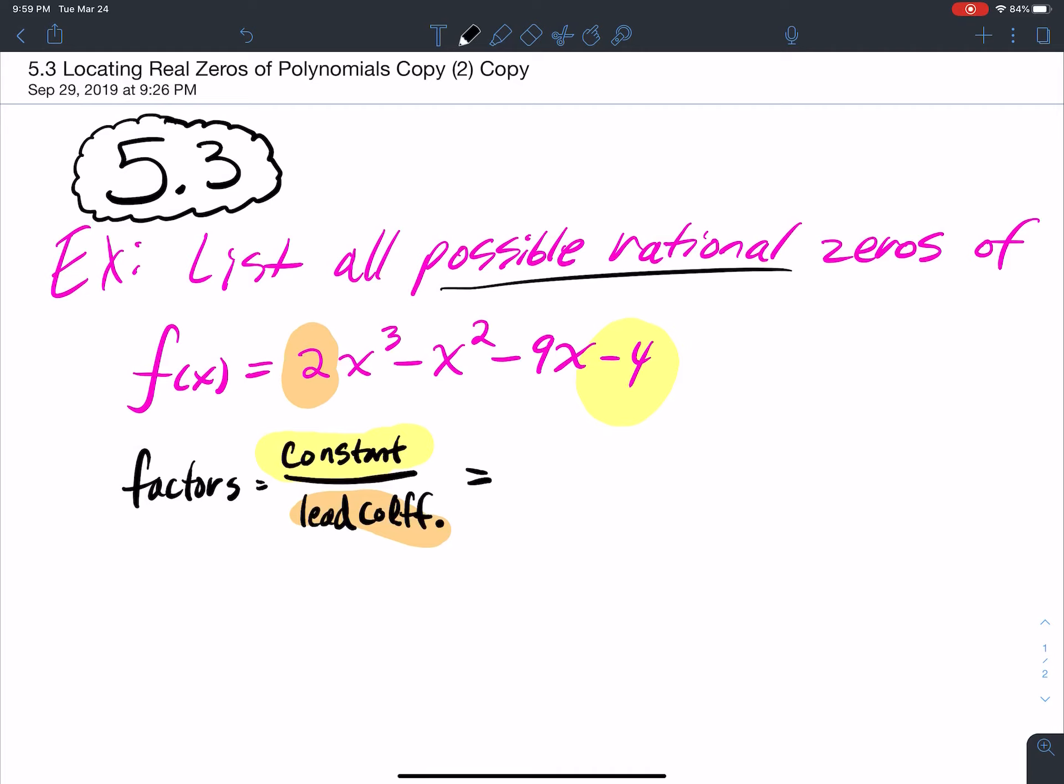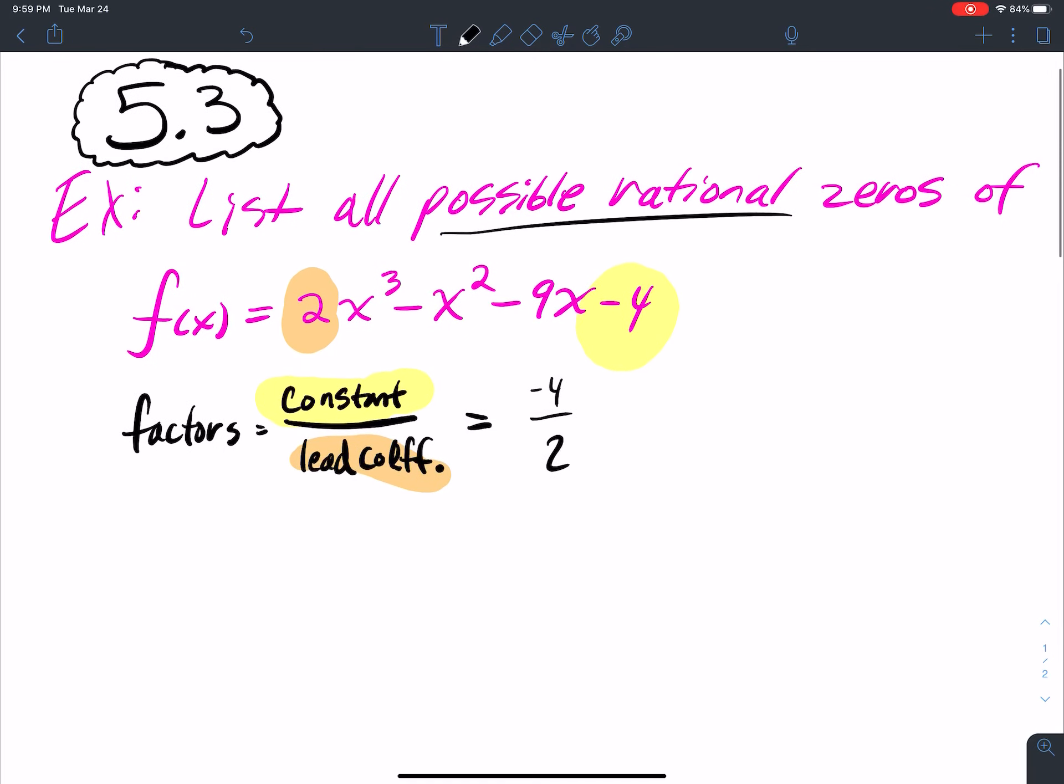So what does this equal? This is negative 4 over 2. I want all the possible factors, all the different combinations that I can get here. Factors can be positive or negative, right? So I'm going to start off my list with a plus or minus. In the numerator, what things can I multiply together to get 4? To get a negative 4, I can multiply 1 times 4 together, so factors for 4 include 1 and 4. What else can I multiply? I can multiply 2 times 2, right? So it looks like 1, 2, and 4 are all factors that are possible.